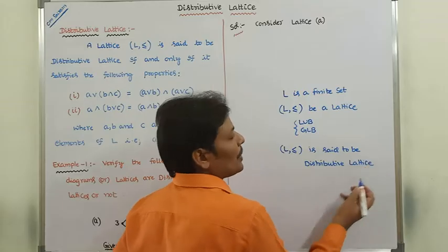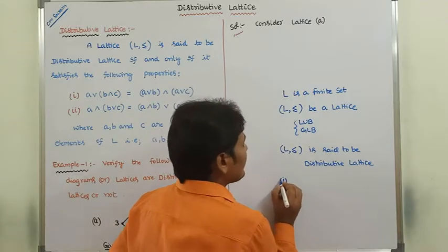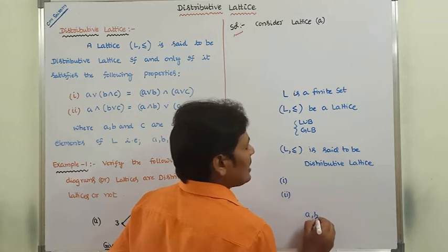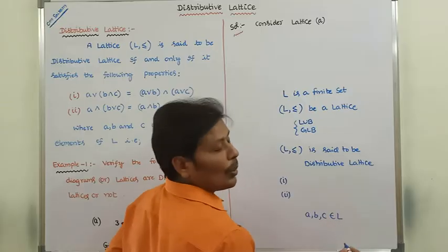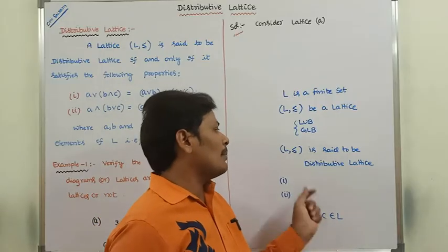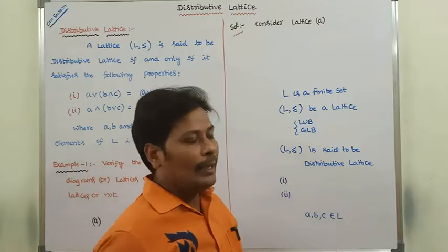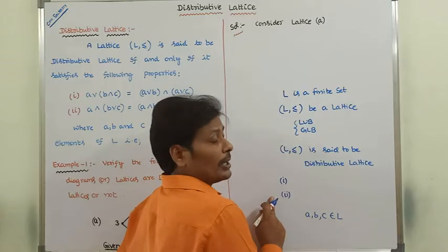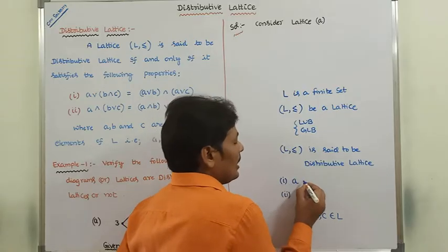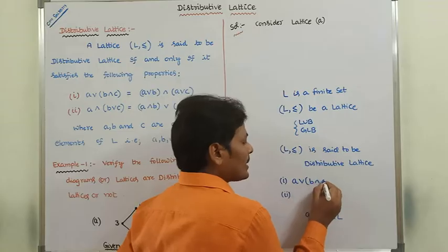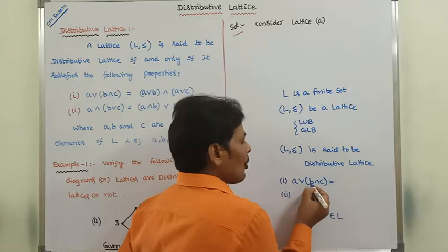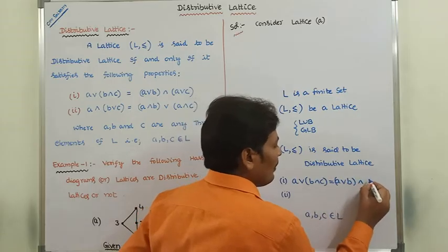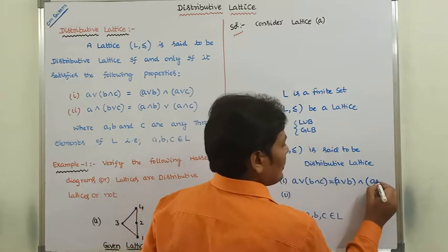What are the two properties? First one: let us consider any three elements A, B, C belonging to L. For those three elements, it should satisfy: A join (B meet C) is equal to (A join B) meet (A join C). This is the first distributive property.